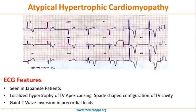Such giant precordial T wave inversions in all leads can also be seen in increased intracranial pressure — these are called cerebral waves. However, you can easily differentiate between the two by clinical history. If the patient has a cardiac clinical history, it will be atypical hypertrophic cardiomyopathy. If the patient has signs and symptoms of increased intracranial pressure, it will be cerebral T waves.